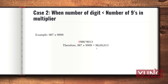Let's come to Case 2, where the number of digits is less than the number of 9s in the multiplier. Here we have 987 multiplied with 9,999. The number of digits in the multiplicand is 3, which is less than the number of 9s, which is 4. To compensate for this difference, we add a 0 in front, making the number of digits in the multiplicand equal to the number of digits in the multiplier, and then proceed in the same manner. After adding 0 in front and subtracting 1 from the multiplicand, we get 0,986, and I have added a mark here.